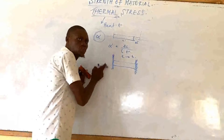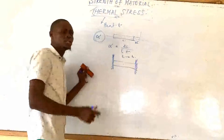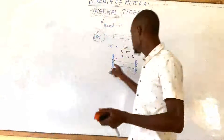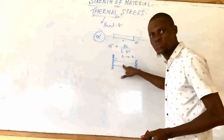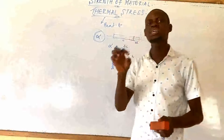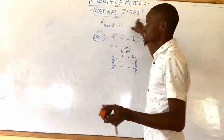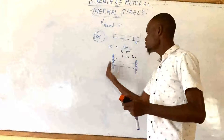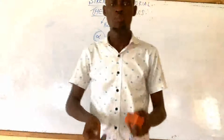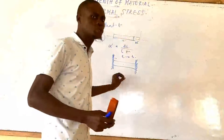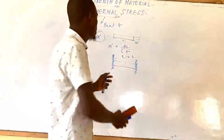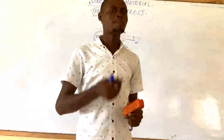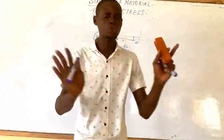The fixed end prevents the expansion from taking place by exerting a compressive force on the bar. The force that acts to counter the expansion of this bar leads to what we call thermal stress. So the kind of stress generated in that member is known as thermal stress. The member tends to extend, but the fixed points return it back to its initial position, so stress is induced in the member. Thermal stress is only induced when a member is fixed at both ends.